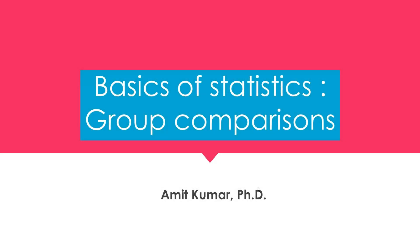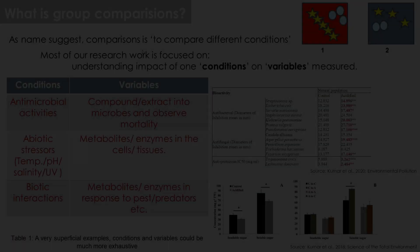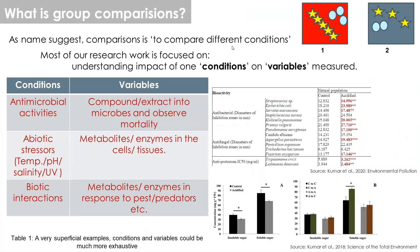Today we will see group comparison. As the name suggests, it involves comparing different conditions. For example, if you have a red box and a blue box with star-shaped objects, you can compare how many are in each box — five in the red and three in the blue. This is a simple example of comparison; in statistics it is much more complex, but this is one of the simplest examples.